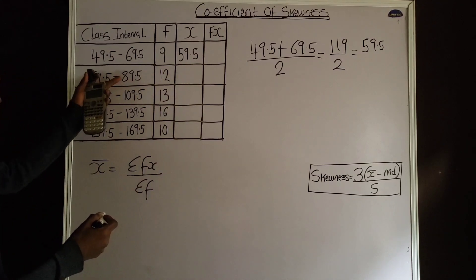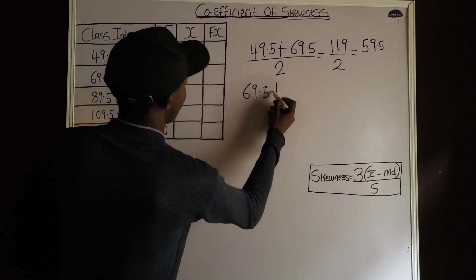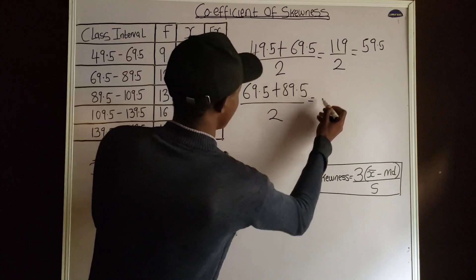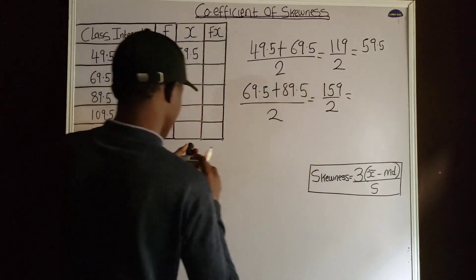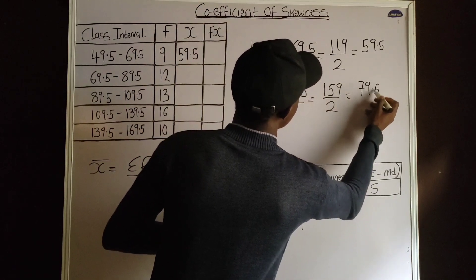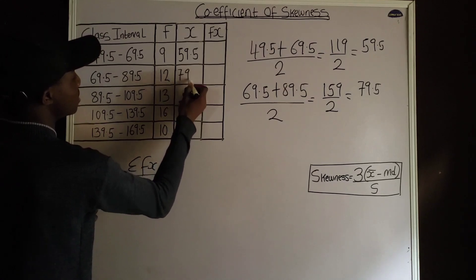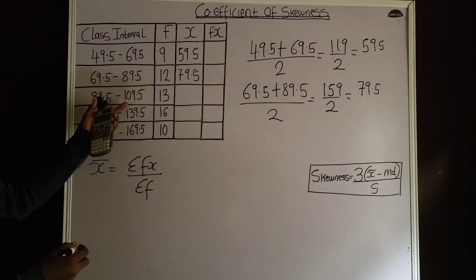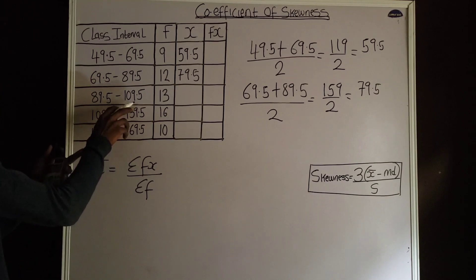For the next class interval, 69.5 and 89.5: adding them gives 159, divided by two gives a midpoint of 79.5. Then for 89.5 and 109.5: adding them gives 199.